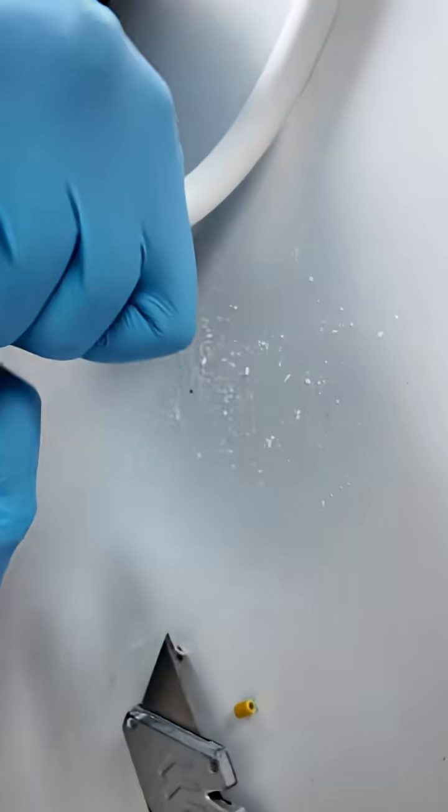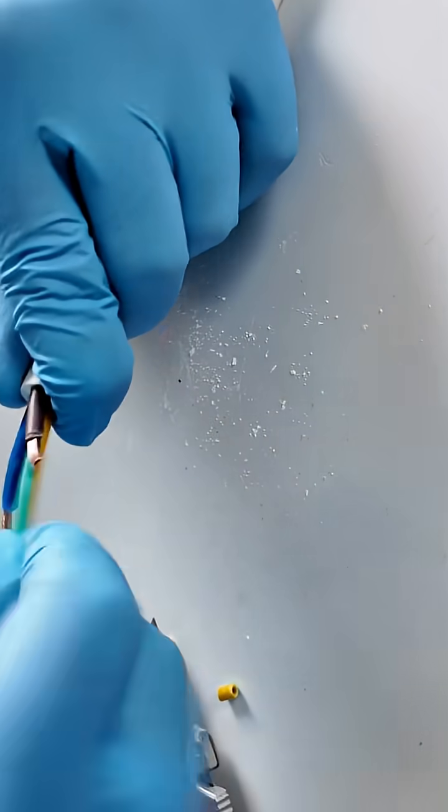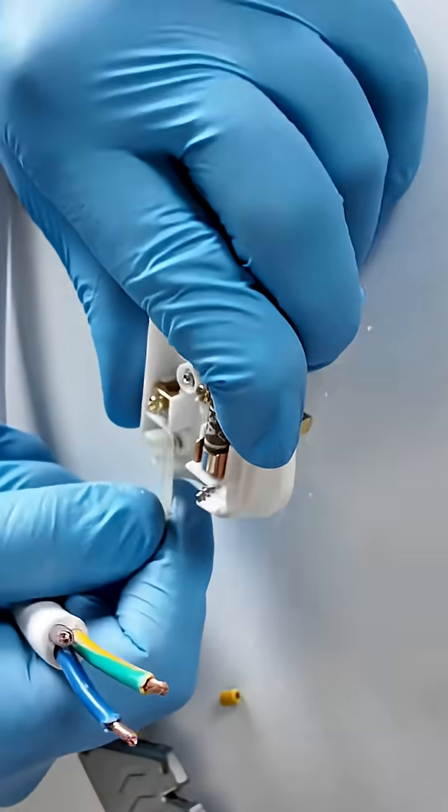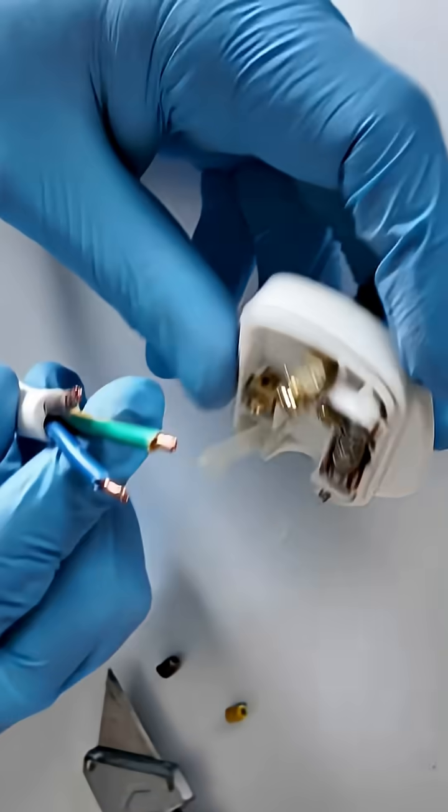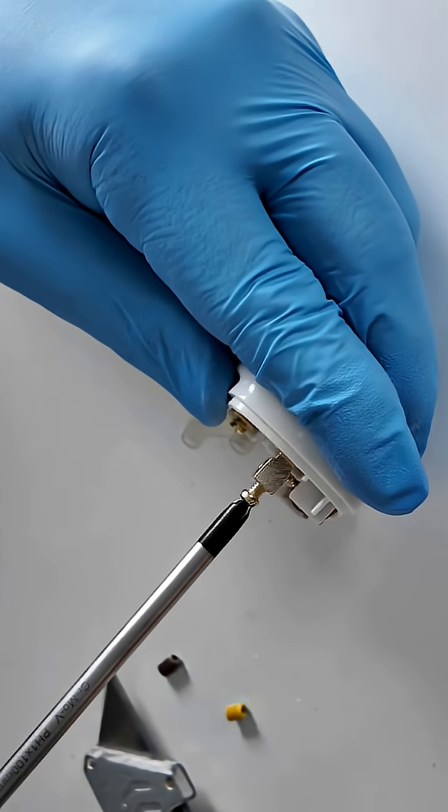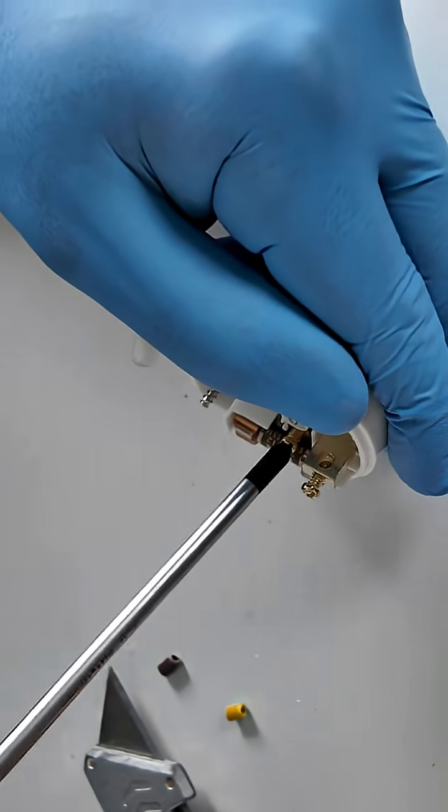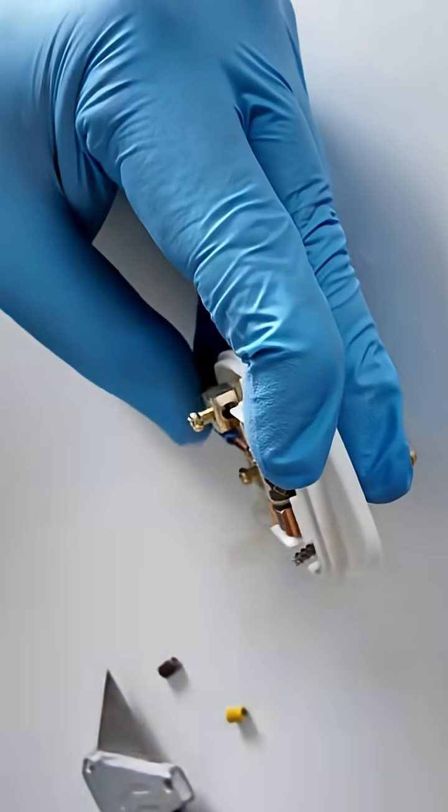Twist the copper strands to tidy them. Identify the terminals: top terminal earth green-yellow wire marked E, right terminal live brown wire marked L, left terminal neutral blue wire marked N. Inside the plug cover, there's often a diagram or the letters L, N, E to guide you.